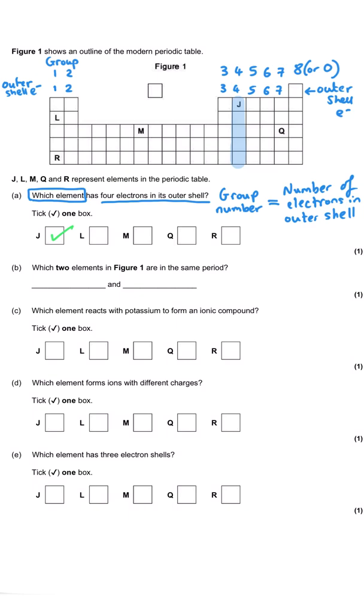Then the question goes on to say, which two elements in the periodic table are in the same period? Periods are the rows in the periodic table, they go from side to side. We're looking for any of these rows that contain elements in the same period. So M and Q are in the same row, which means that they are in the same period of the periodic table. This group here has got a bit of a decoy because these are in the same column, but the columns are called groups. We want the ones going side to side. So M and Q is the correct answer for this. You need both of them for the one mark.